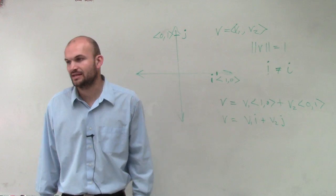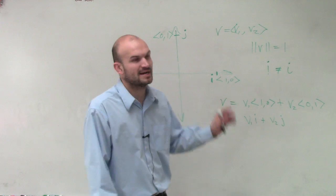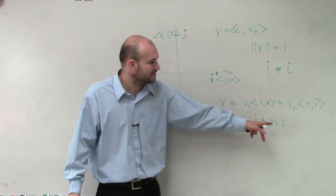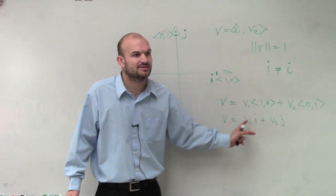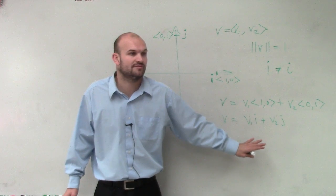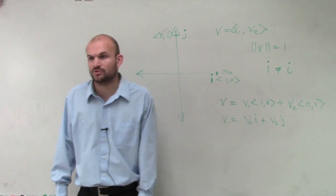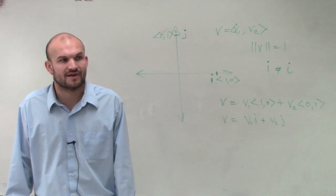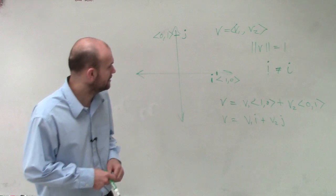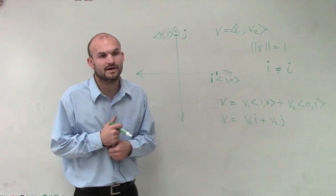So when you guys start seeing those vector forms where it has the i and j, all you need to understand is these are your component forms of your vectors, the V1 and V2. These are what we call your scalar multiples of your vectors. Your V1 and your V2 are going to be your scalar multiples of the i and j. And that's it, there we go, done.